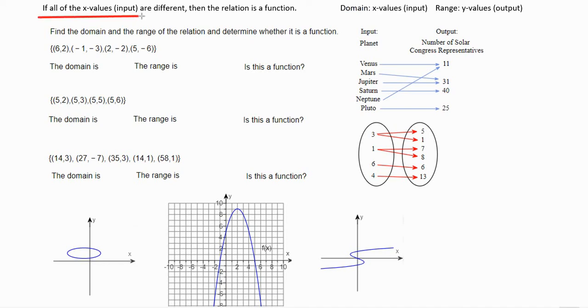So if all of the x values, which means input, are different, then the relation is a function. Write that down for your notes. The domain are your x values, which is input, and your range are your y values, which is the output.